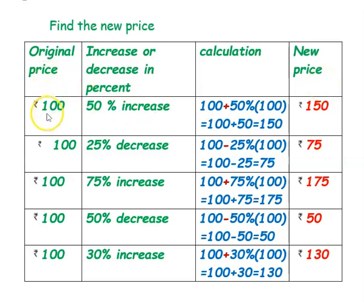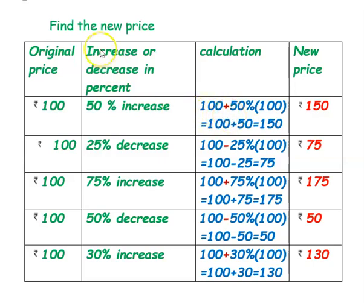The original price is ₹100 and the percent given is 50% increase. To find the new price, we do original price plus the increase percentage. So, 50% of 100 is 50. Therefore, 100 plus 50 equals ₹150.